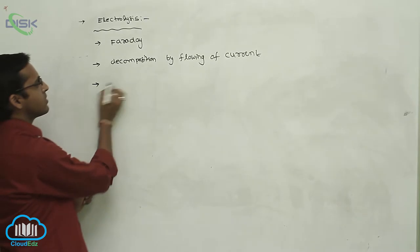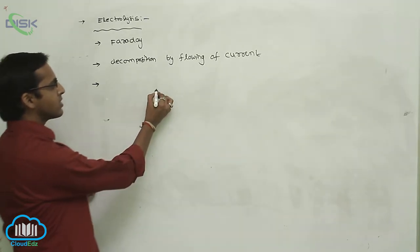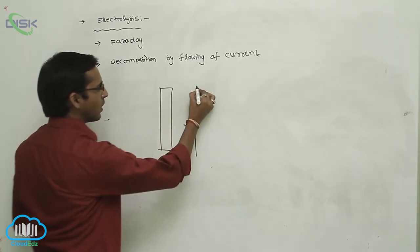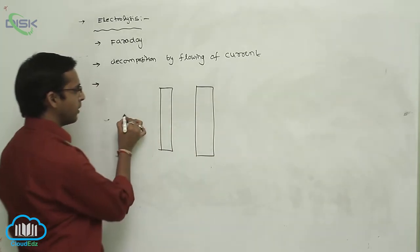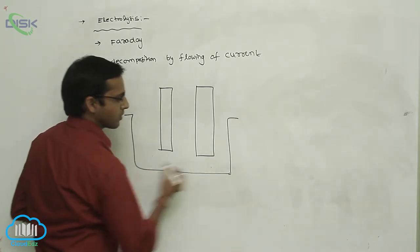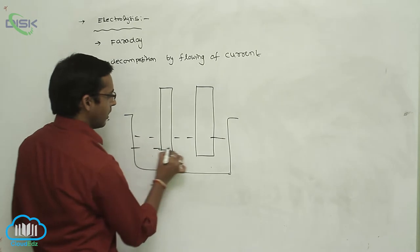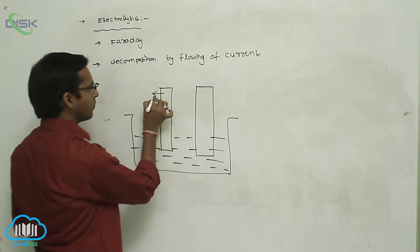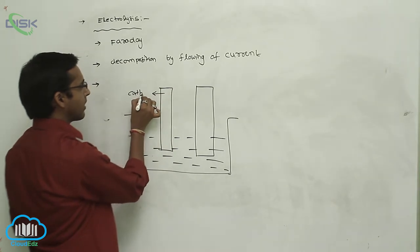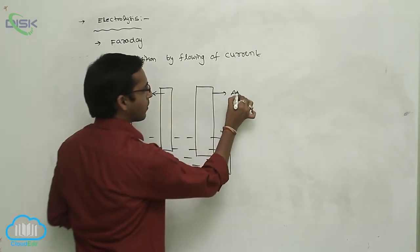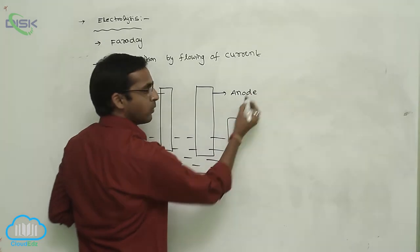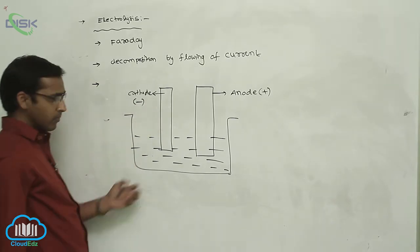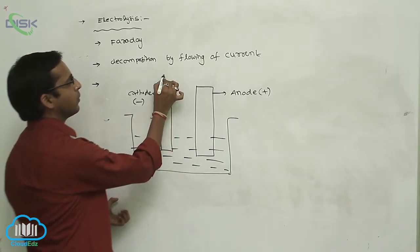For this Electrolysis, we consider one experiment. First, take two plates — two electrodes. These two electrodes are dipped in an aqueous solution. One of the electrodes acts as cathode and one acts as anode. Generally, anode carries positive charge and cathode carries negative charge. These two electrodes are connected to a battery.